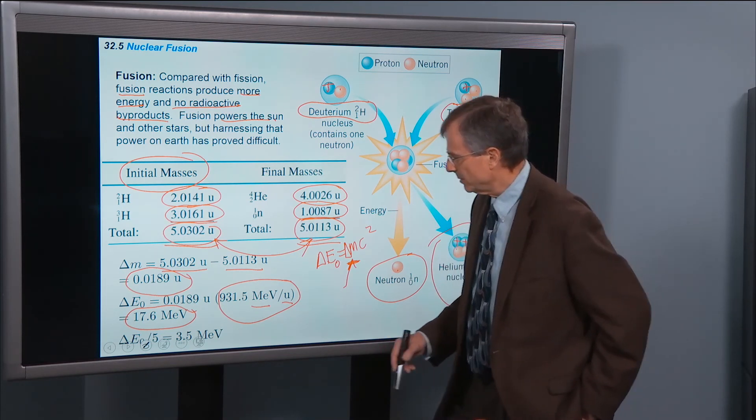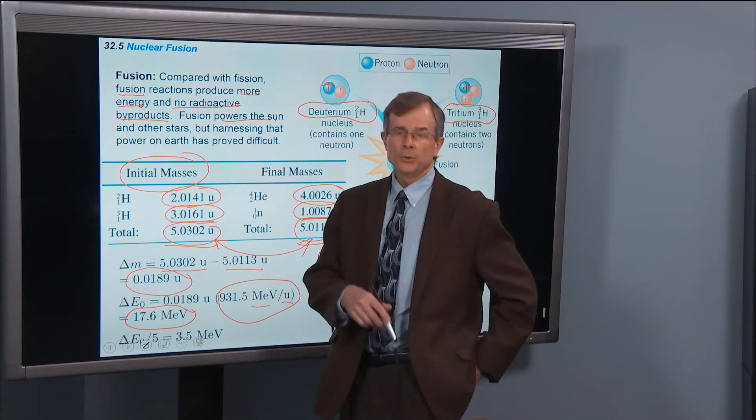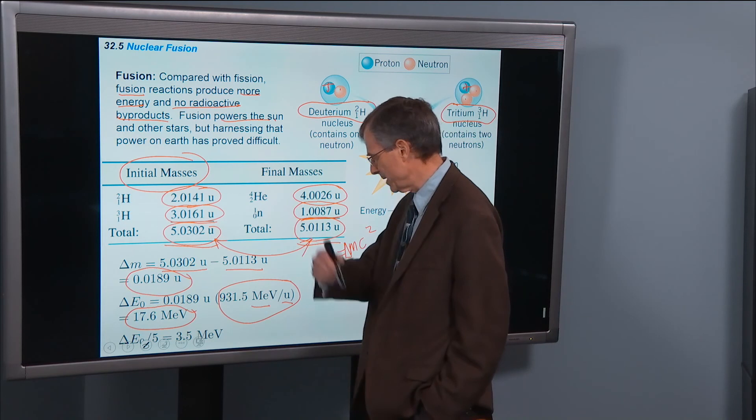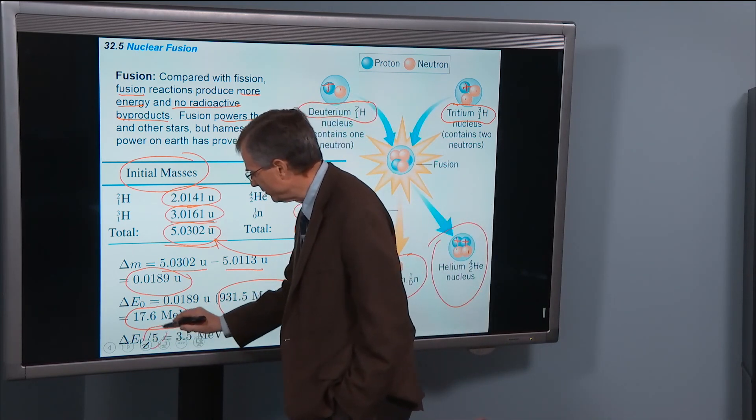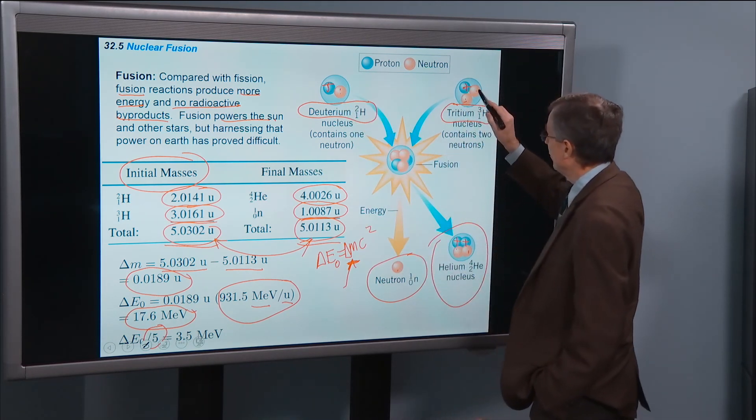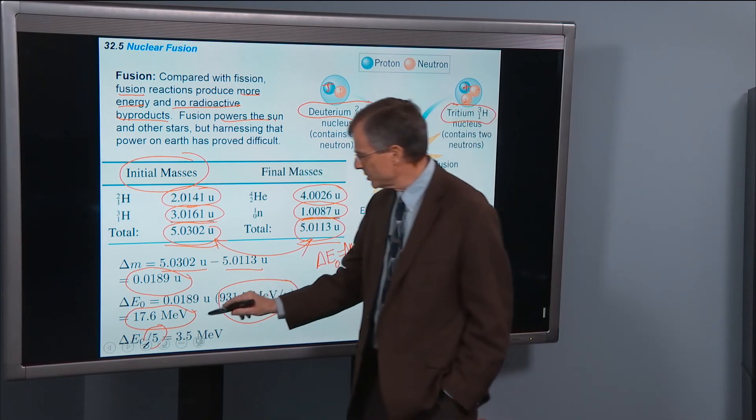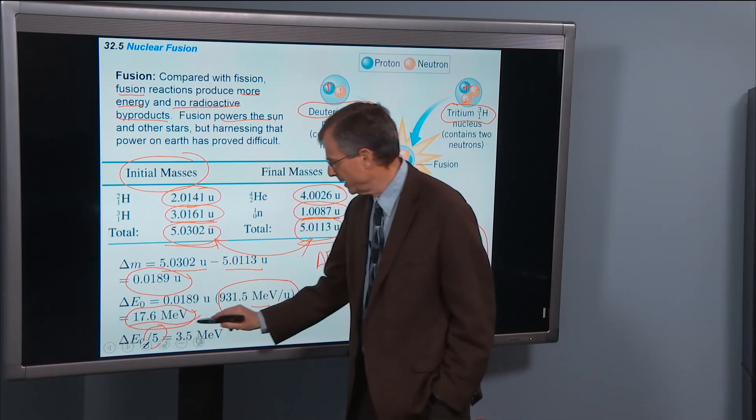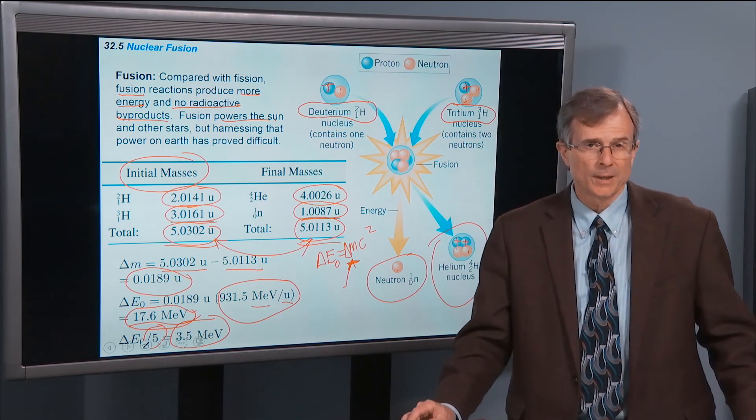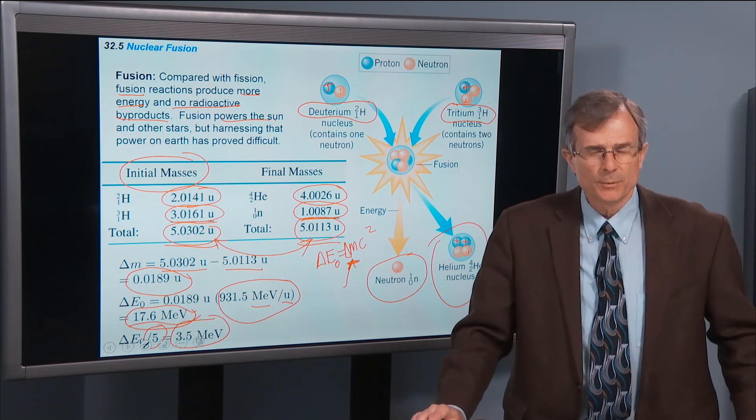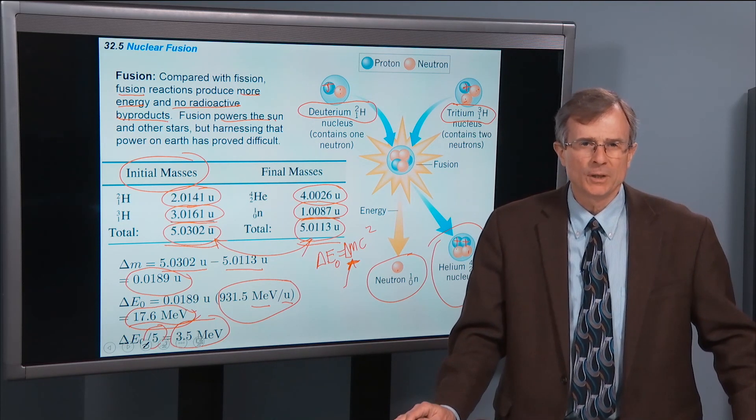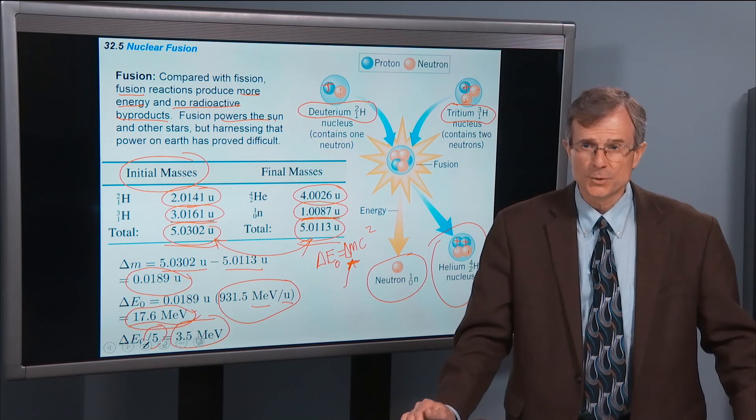And if we want to work out the energy released per nucleon, so we can compare it with the fission reaction with uranium-235 that we talked about in the last section, then we simply divide by the number of nucleons. How many nucleons do we have? One, two, three, four, five. So we divide this total, 17.6 by 5, and we get an energy out of 3.5 MeV per nucleon. Comparing that with the fission reaction that we talked about in the last section, which was 0.9, about 1 MeV per nucleon, we're getting a great deal out of this fusion reaction.